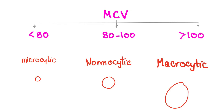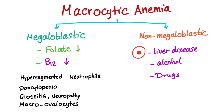Macrocytic anemia will have an MCV of more than 100 femtoliters. Macrocytic anemia has two subtypes: megaloblastic and non-megaloblastic.